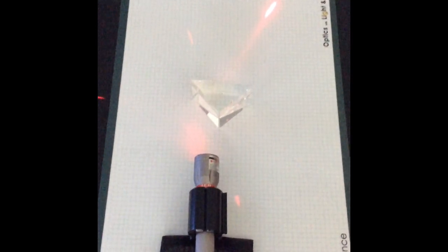For the next part of the lab, you're going to take a laser beam and you're going to shine the laser beam through the corner of a prism.